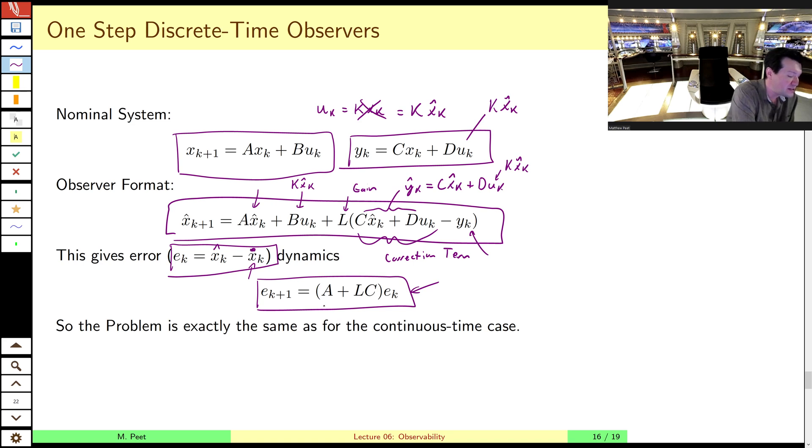And so what we see here is that the closed loop dynamics for the Luenberger observer in the discrete time case are exactly equal to those of the continuous time. Where, remember, we had e dot t equals a plus lc e of t. So the error dynamics go to zero if we choose l such that a plus lc is now, in this case, we want it to be Schur, not Hurwitz.